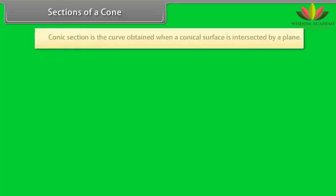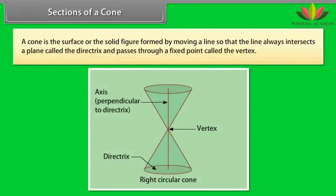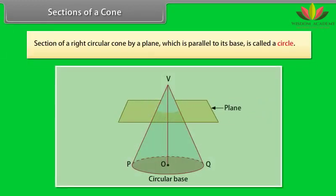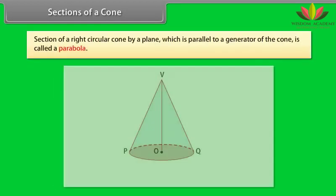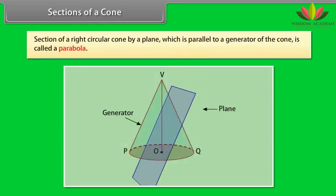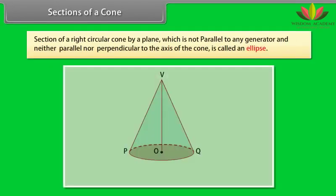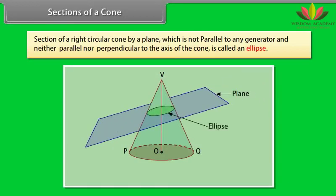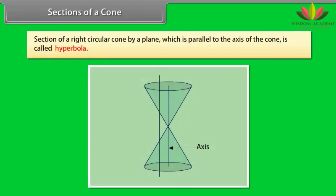Sections of a cone. A conic section is the curve obtained when a conical surface is intersected by a plane. A cone is the surface or solid figure formed by moving a line so that it always intersects a plane called the directrix and passes through a fixed point called the vertex. A section of a right circular cone by a plane parallel to its base is called a circle. A section parallel to a generator of the cone is called a parabola. A section of a right circular cone is called an ellipse. A section by a plane parallel to the axis of the cone is called a hyperbola.